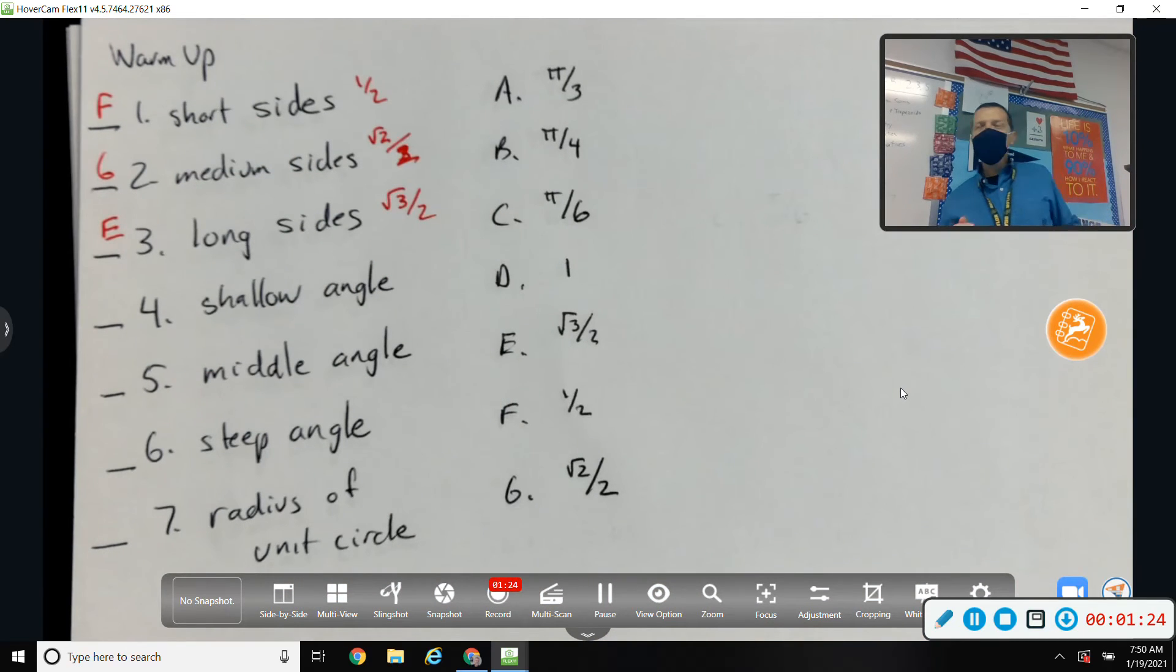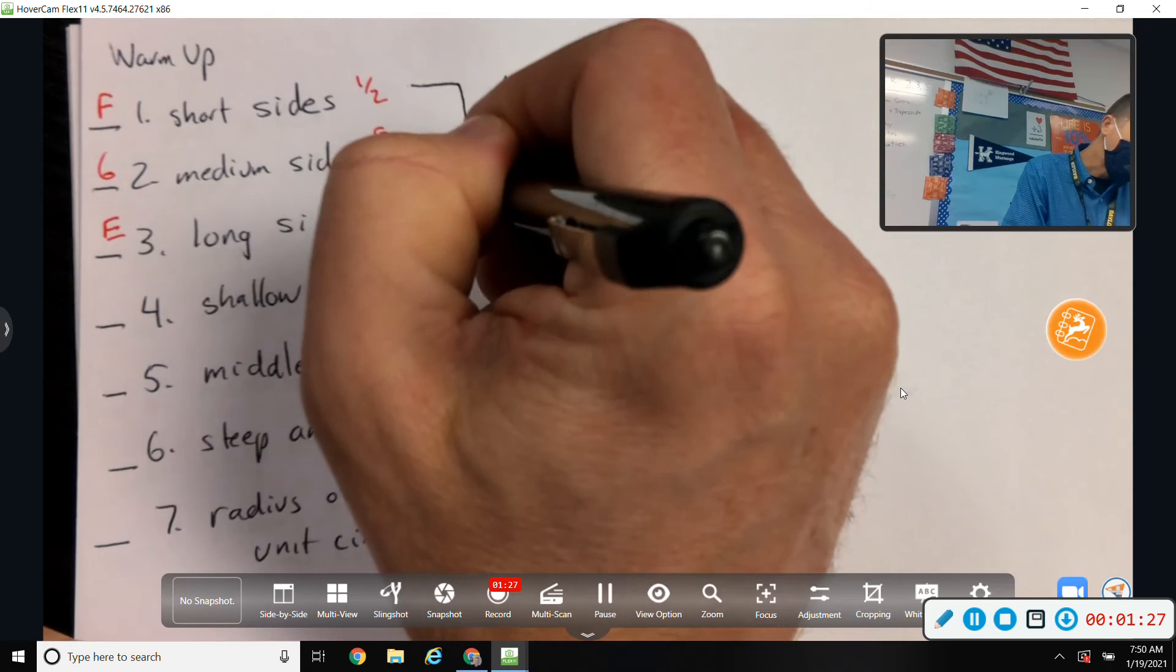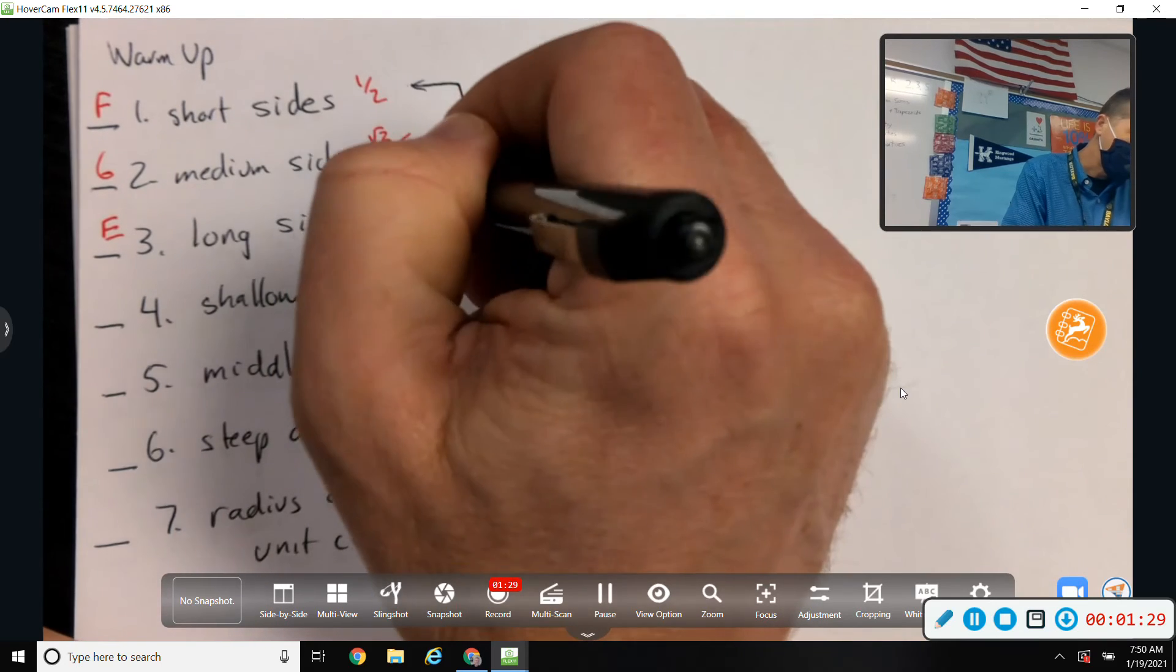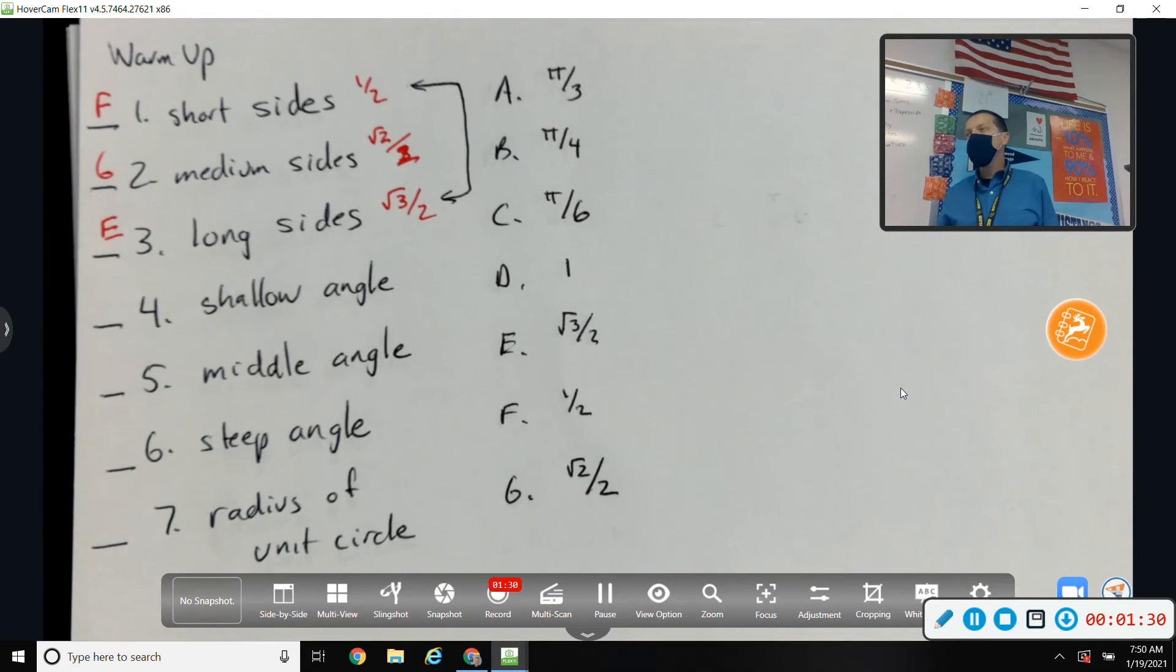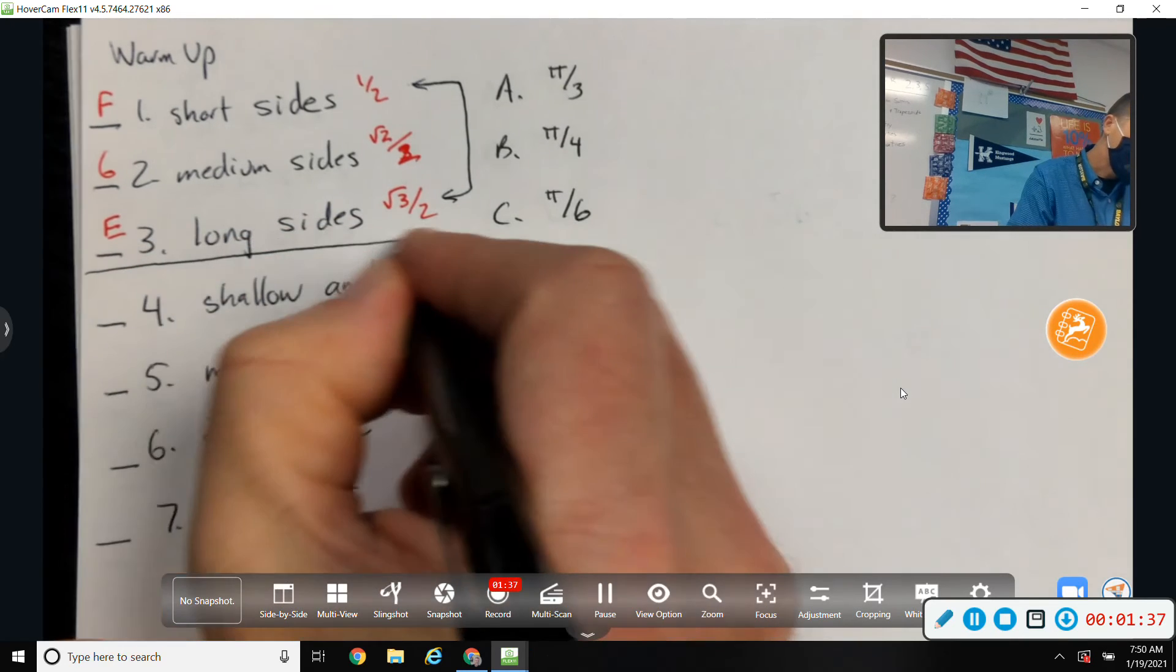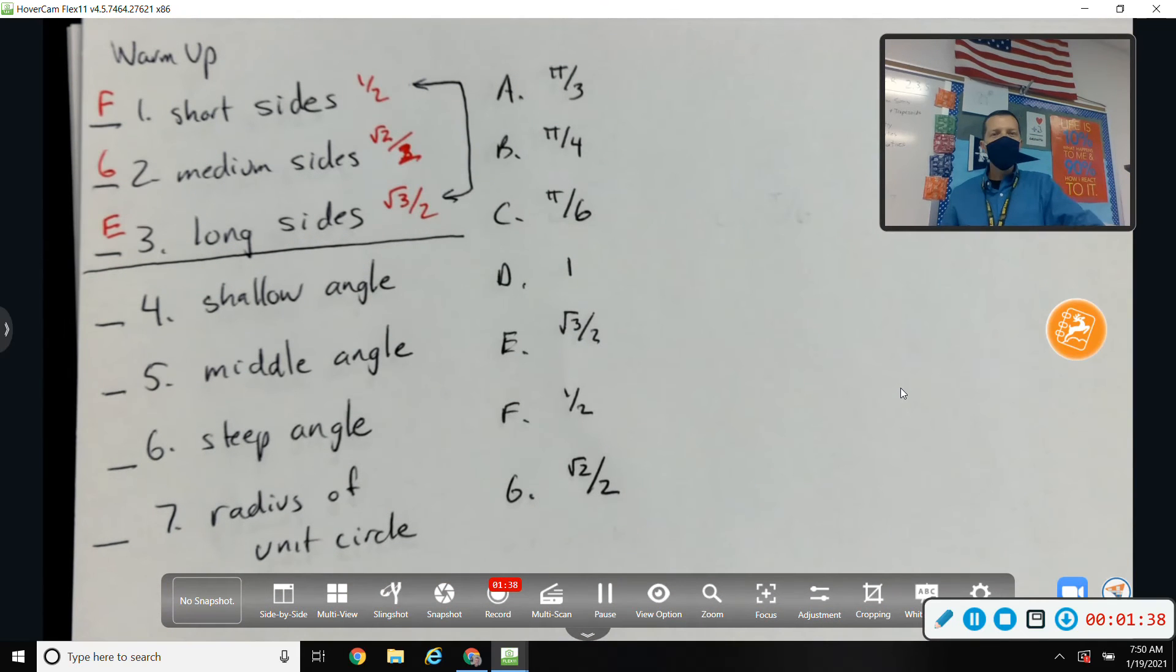And you probably also remember that if a triangle has a short side, it has a long side, so those two kind of go together. If it has a medium side, it has two medium sides. They're both root 2 over 2. All right, so that's one piece of, or one set of information.